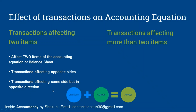When goods are sold on credit, assets decrease because the goods are being sold, and on the other hand, debtors are increasing because the business has to receive payment from those debtors. So this transaction leads to a decrease in one asset and an increase in another asset — both affecting the same side of the equation.